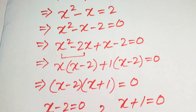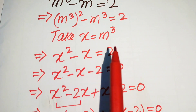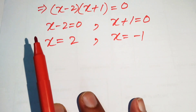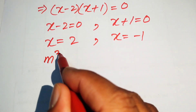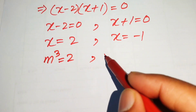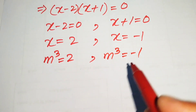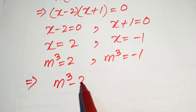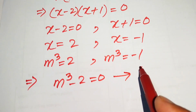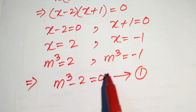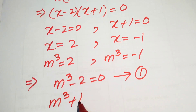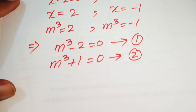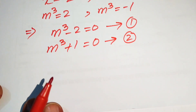Since we set x equal to m cubed at the start, we back substitute. This gives two cases: m cubed equals to 2, which we call equation 1, and m cubed equals to minus 1, which we call equation 2. We now solve these two equations simultaneously to find all values of m.